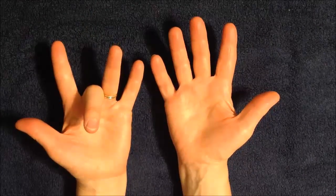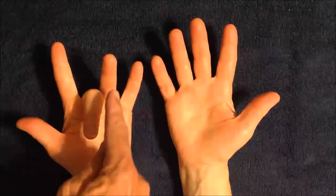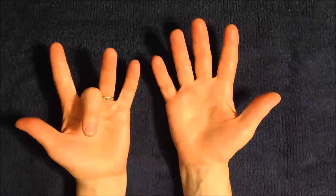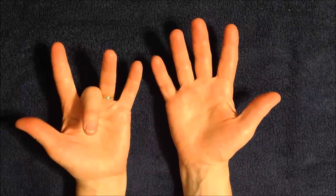To the left of the folded finger we have 2, which means 20. And to the right of the folded down finger we have 7 fingers. So the answer is 27. 9 times 3 equals 27.